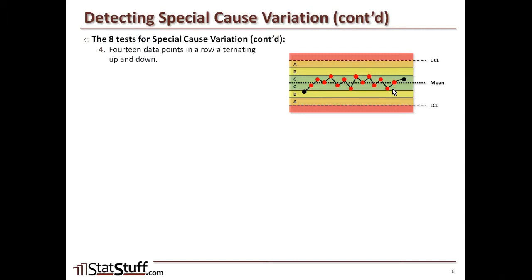If you're seeing 14 data points and none of them are moving in the same direction — no two consecutive points go the same way — something might be happening that's not typical of common cause variation.